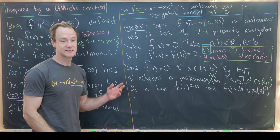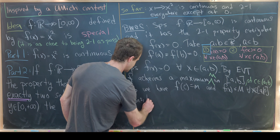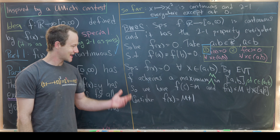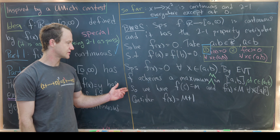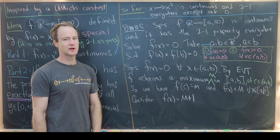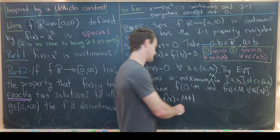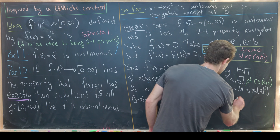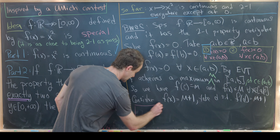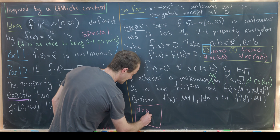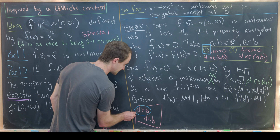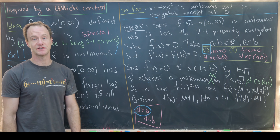So f(c) = M and f(x) ≤ M for all x in [a, b]. Now consider the equation f(x) = M + 1. This must have exactly two solutions by the two-to-one property, since M + 1 > 0. We only need one solution — call it d. This gives two sub-cases: d > b or d < a.